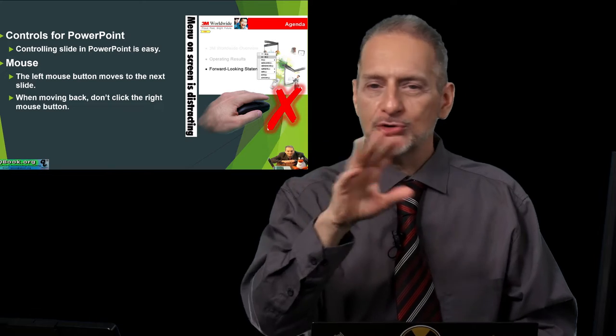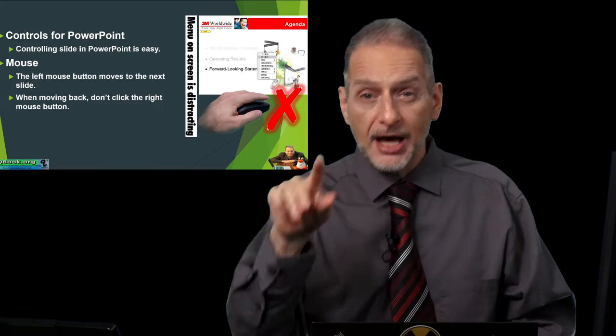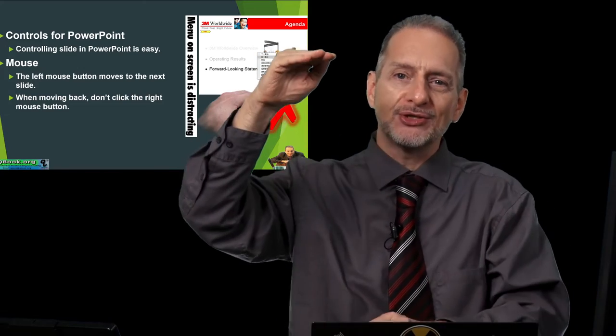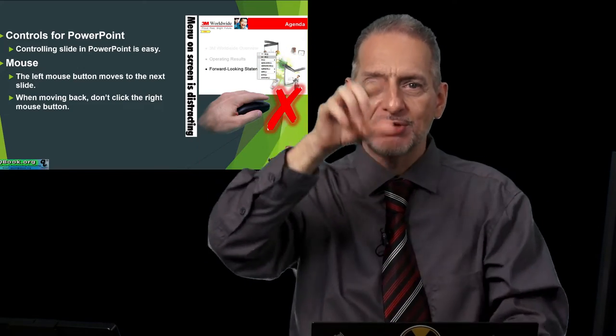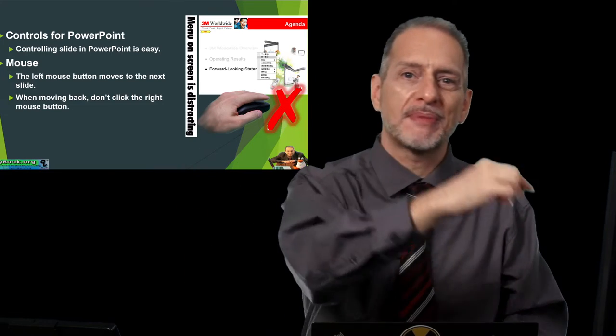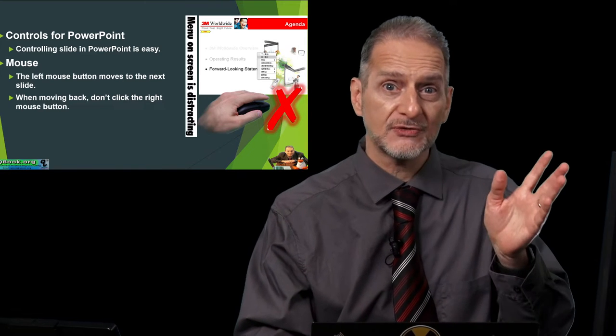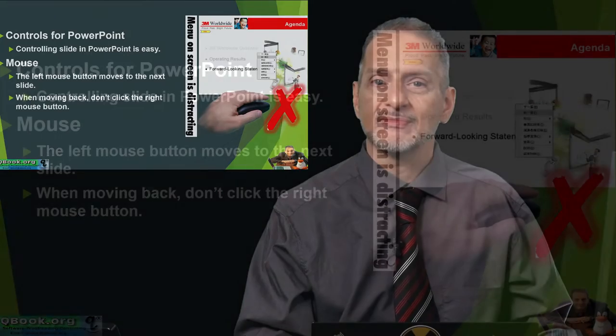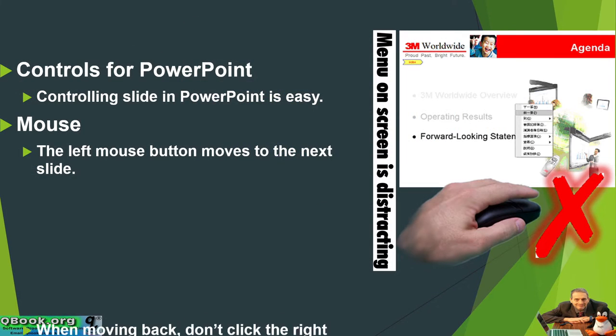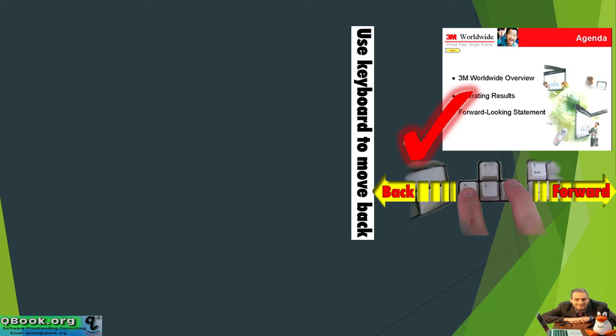But then when they go too fast and they need to go back, they click the other button. The problem is in Windows, the other button opens up a menu, and then they have this long menu. Then they go to the menu, go to slides, then to the slides with like 50 slides, then choose the slide and go back. Well, it's very distracting, very confusing, and stressful. It makes people feel a lot of pressure.